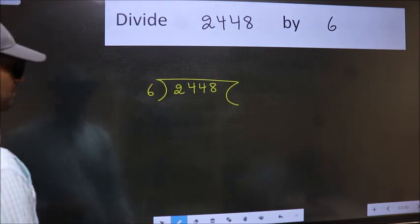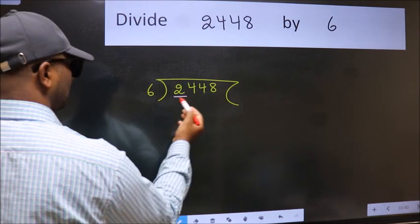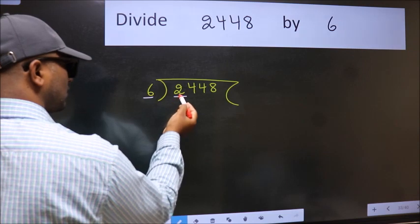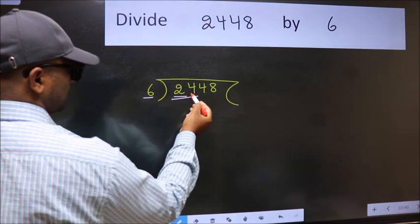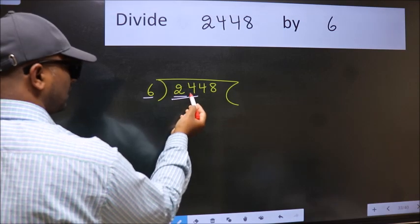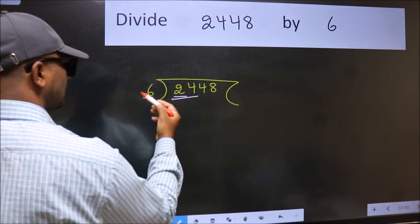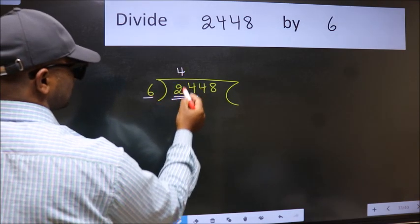Next, here we have 2 and here 6. 2 is smaller than 6, so we should take 2 numbers: 24. When do we get 24 in the 6 table? 6 times 4 is 24.